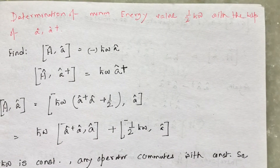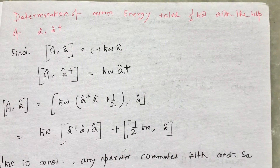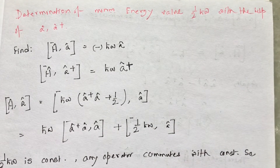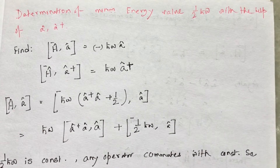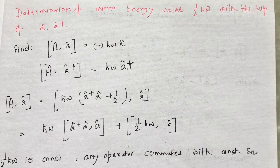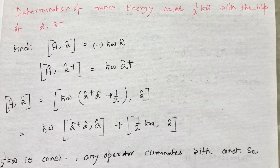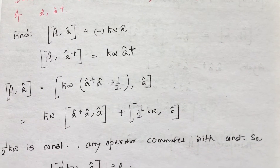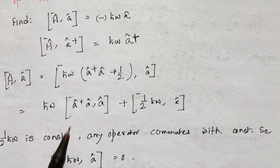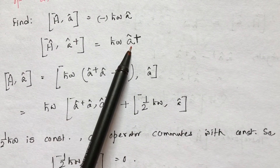Let's determine the minimum energy value half ℏω, which corresponds to the ground state of the harmonic oscillator. This time I will use a and a†, that is the raising and lowering operators, or together they may be called ladder operators. I need to find out these two relations, which I am going to prove.